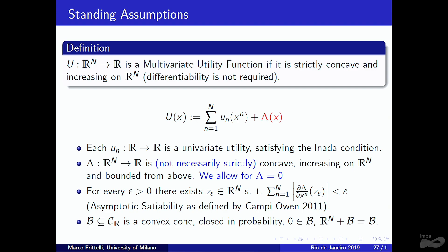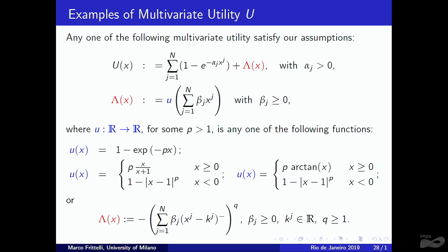The multivariate utility is decomposed into two terms: the sum of single-agent utilities Uₙ (concave and increasing, no differentiability required), and a systemic component Δ — a function from ℝⁿ to ℝ that is concave and increasing but not strictly so. Setting Δ = 0 recovers the previous univariate setting. The associability condition on Δ is required.